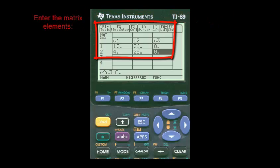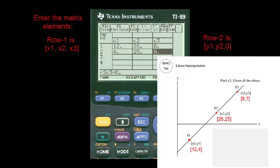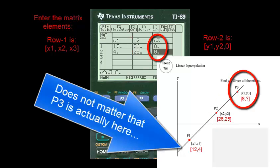Enter the matrix elements. Row 1 has the x values. Row 2 has the y values, which correspond in this example to 12 and 4 for x1 and y1, 26 and 25 for x2 and y2. And x3 is 8. We don't know y3 yet.